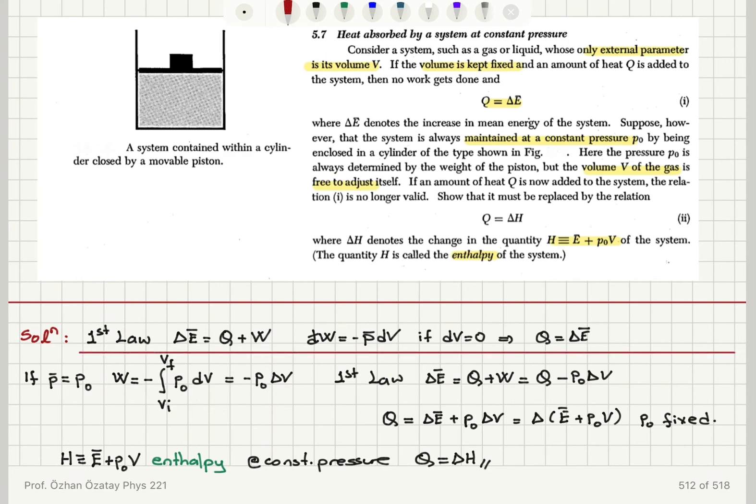So first I looked at the case where I have constant volume. So that was this case. Let me show it with blue, this is the fixed volume case. And here I'm looking at the case where I have fixed pressure. So in that case, I find that the change in the mean internal energy should be replaced with change in enthalpy of the system.